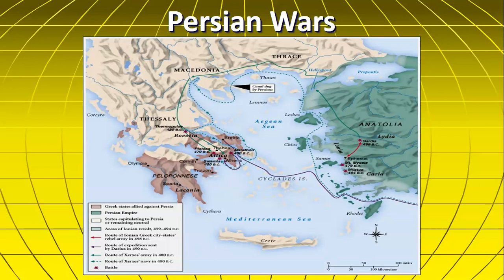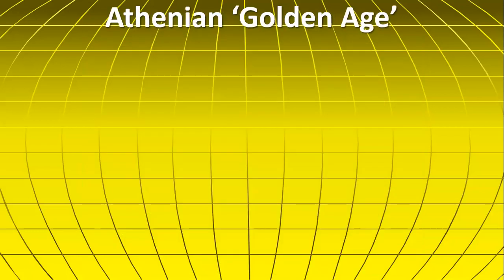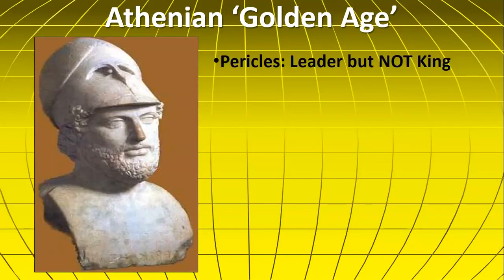The Athenians, who led the navy, are now in a really powerful position — the most powerful of the city-states. This leads to the Athenian golden age, the age of Pericles. Pericles is not a king; he was the leader of the military force of the Athenians, given a great deal of credit and stature, but he's not a king.